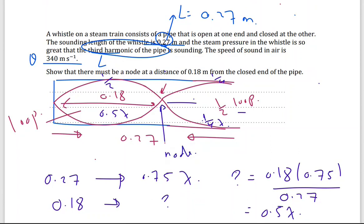This distance from here till here, it should be half lambda. From here till here, it's a quarter lambda. So I'm going to do cross multiplication. Cross multiplication, I need this, how much? So 0.18 times 0.75 divided by 0.27, so I should get 0.5 lambda. So 0.18 correspond to 0.5 lambda, that means I will have here a node. This is one way.